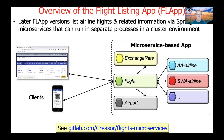Later FLAP versions list airline flights and related information by Spring microservices that can be running in separate processes in a cluster environment, data center, or cloud. That's what we're going to focus on in the rest of this lesson. You can get the source code at the bottom of the slide for the FLAP microservices version. We'll talk about the architecture of this solution throughout the rest of this slide, and then walk through the source code in the next two parts of the lesson.